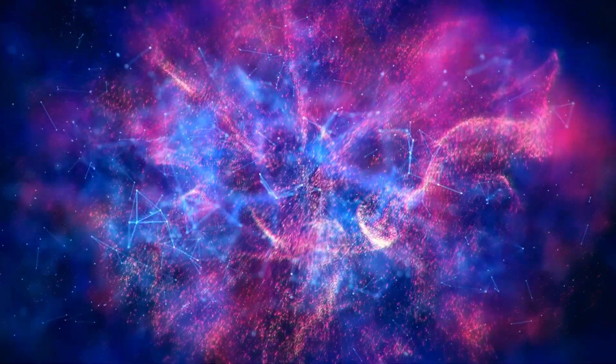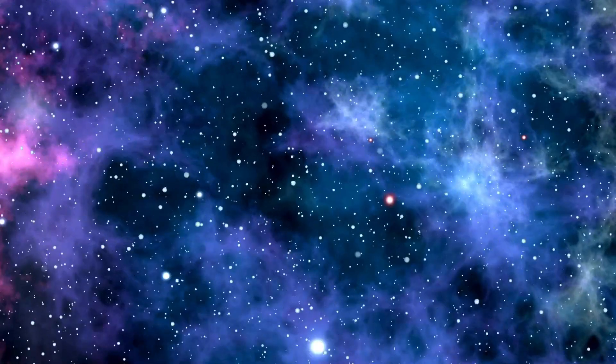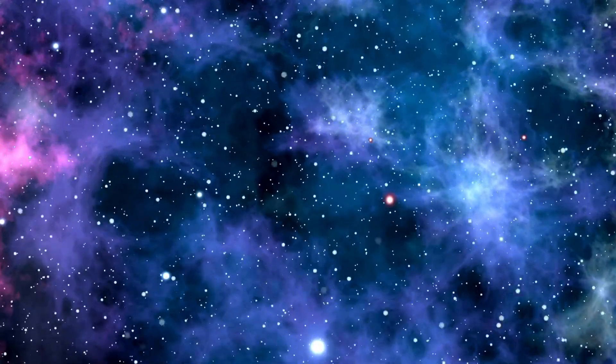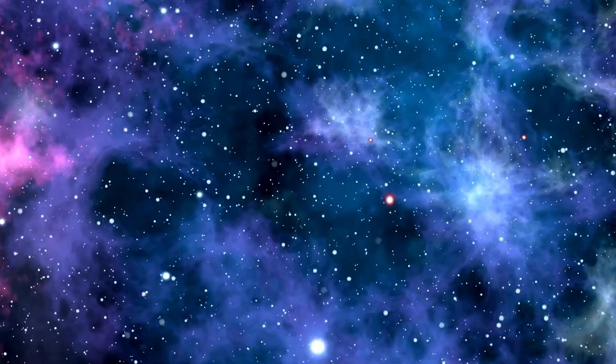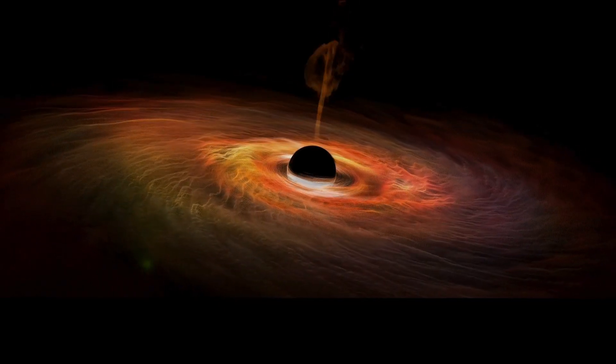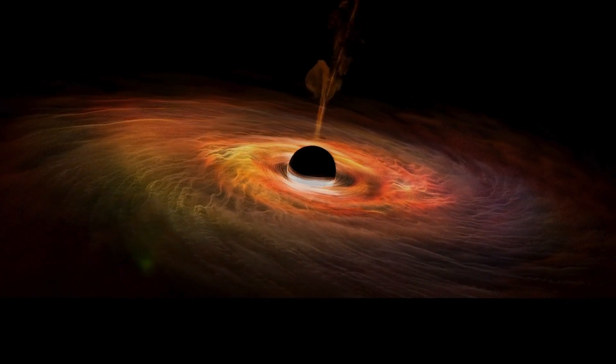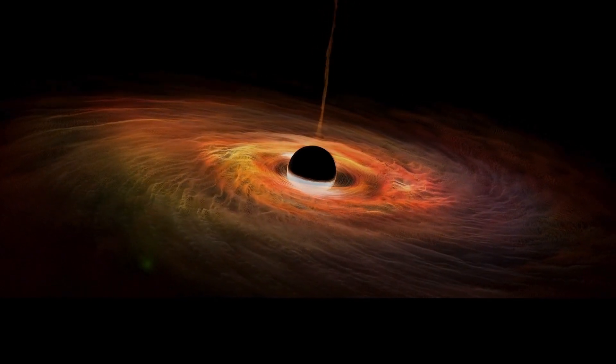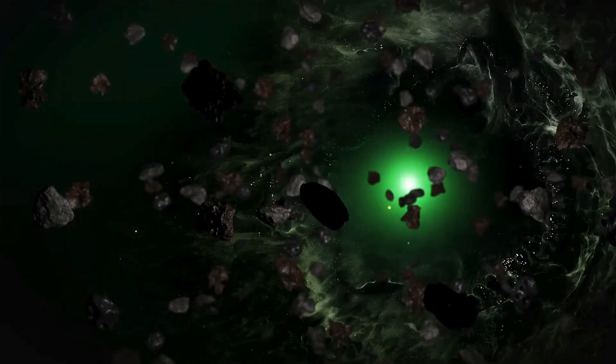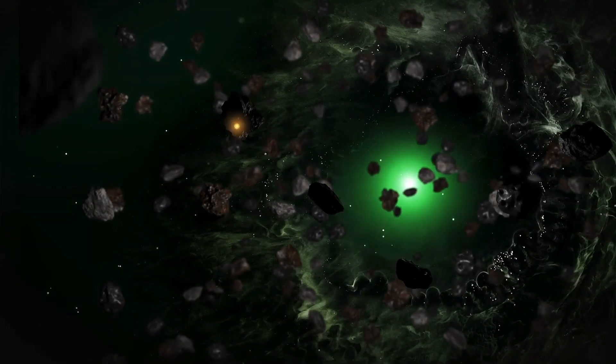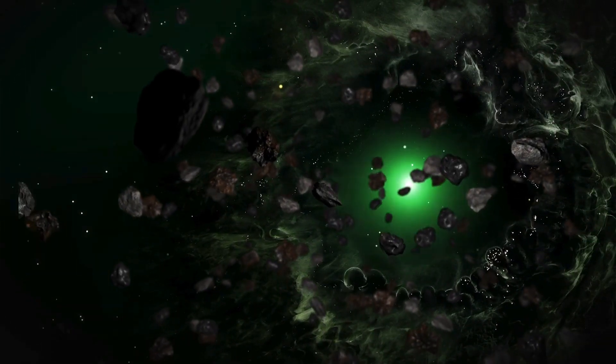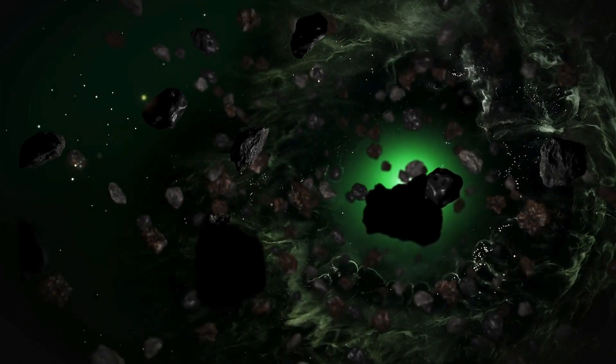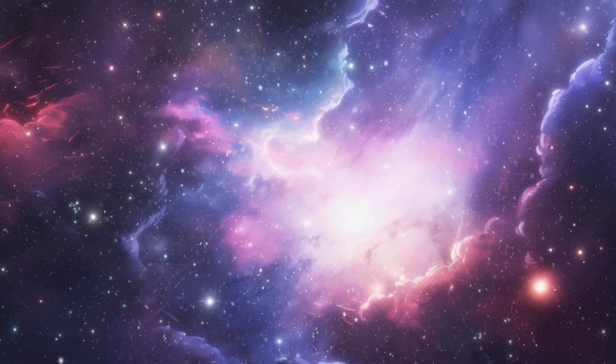Dark matter, an invisible and mysterious substance, is thought to make up about 85% of the universe's mass, shaping the large-scale structure of the cosmos. Conventional cosmology suggests that galaxies form within massive halos of dark matter, which gravitationally draw in ordinary matter, allowing stars and galaxies to coalesce. Yet JWST observations challenge this model, as galaxies appear to be forming in ways that defy our understanding of dark matter distribution.